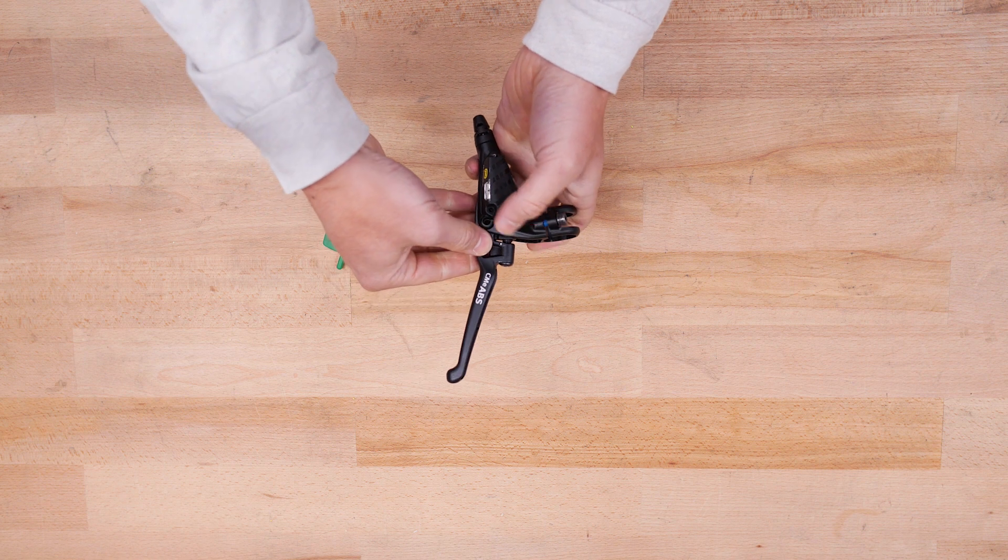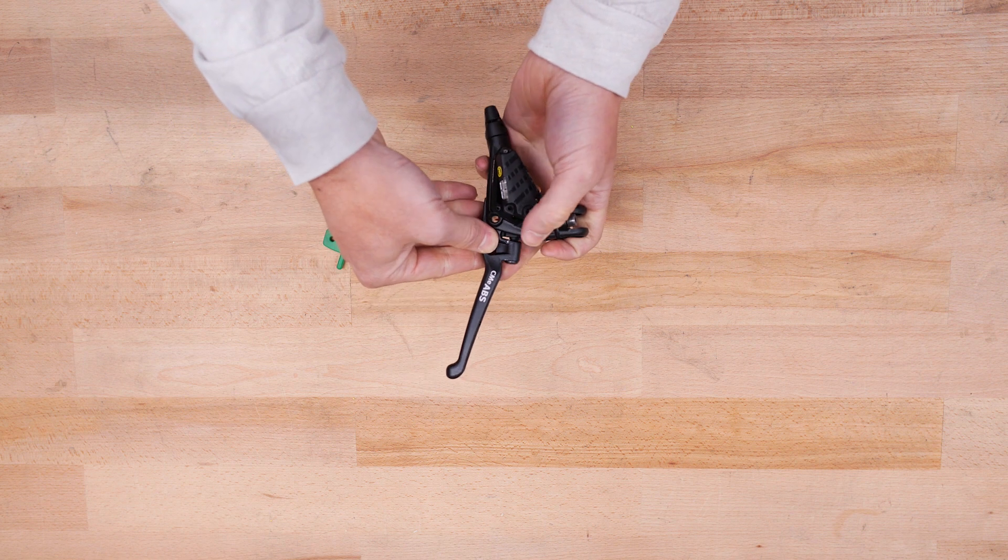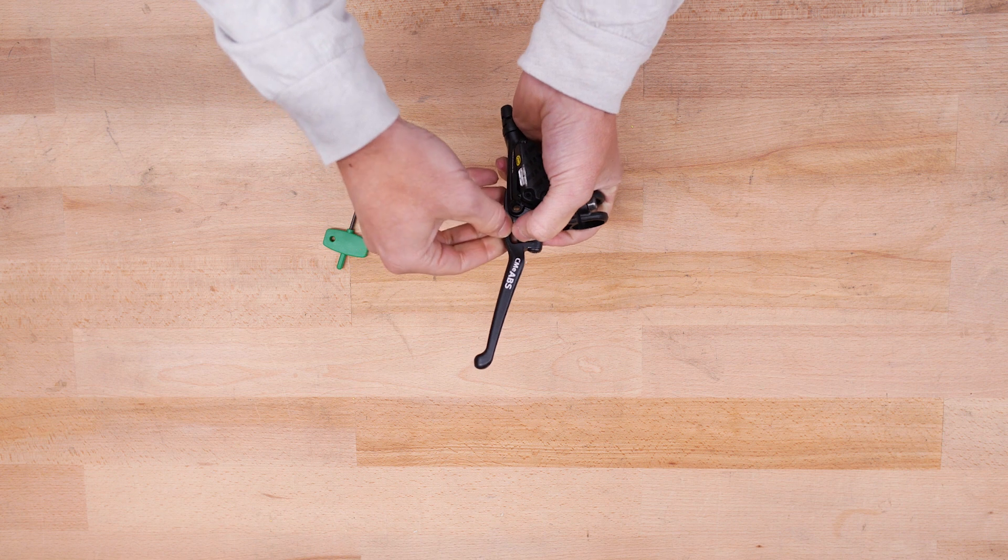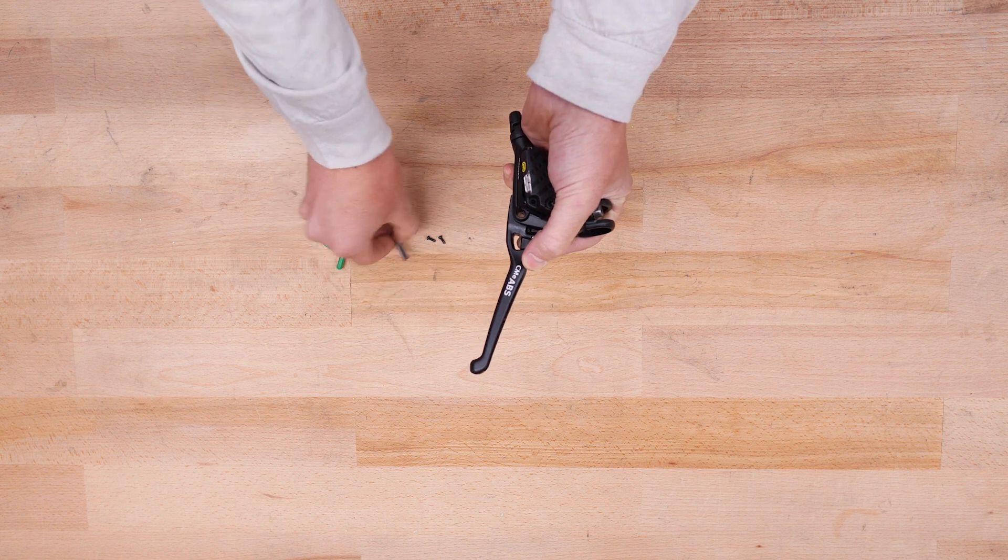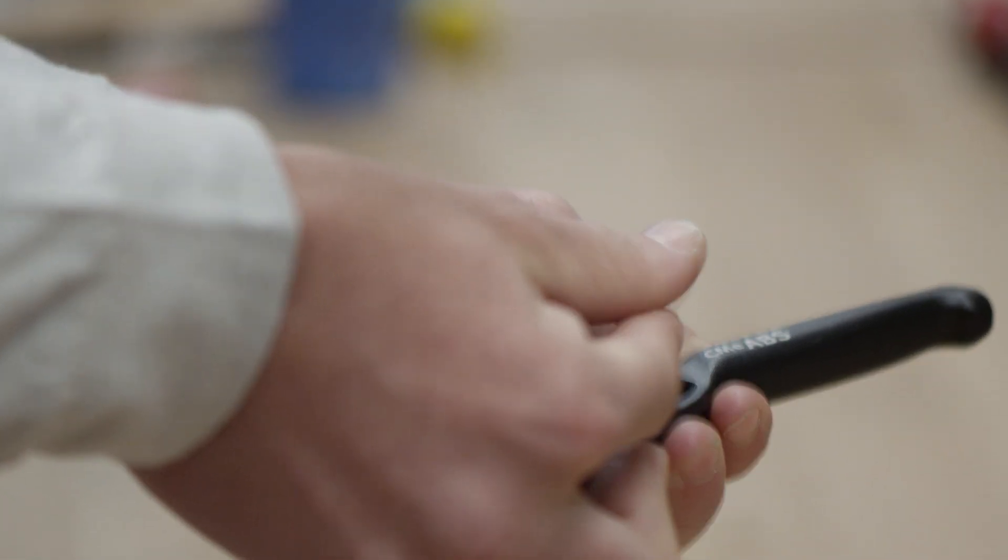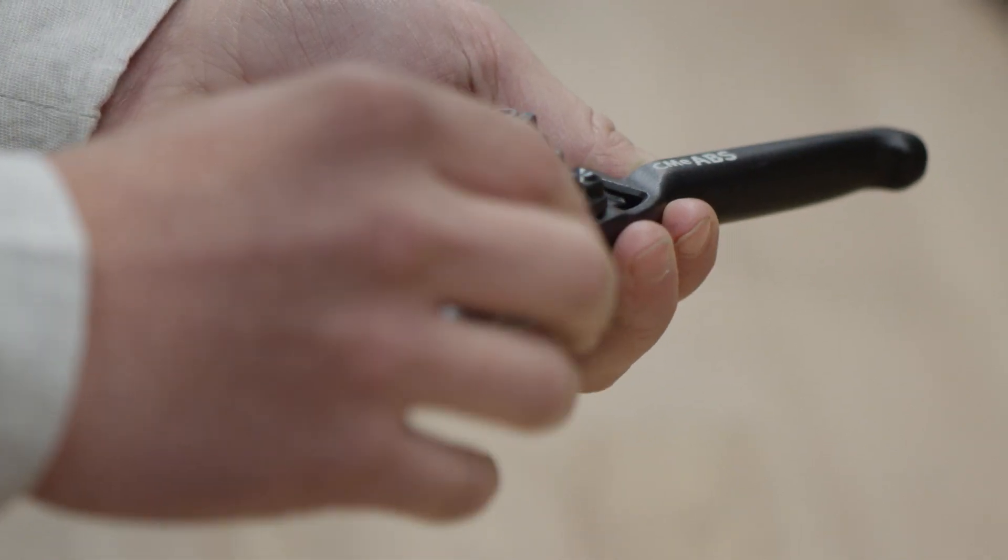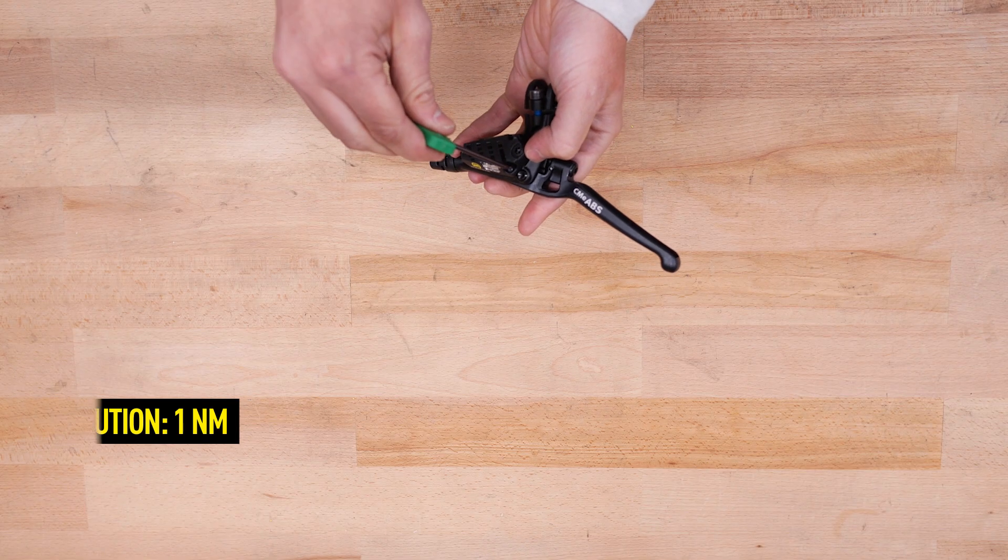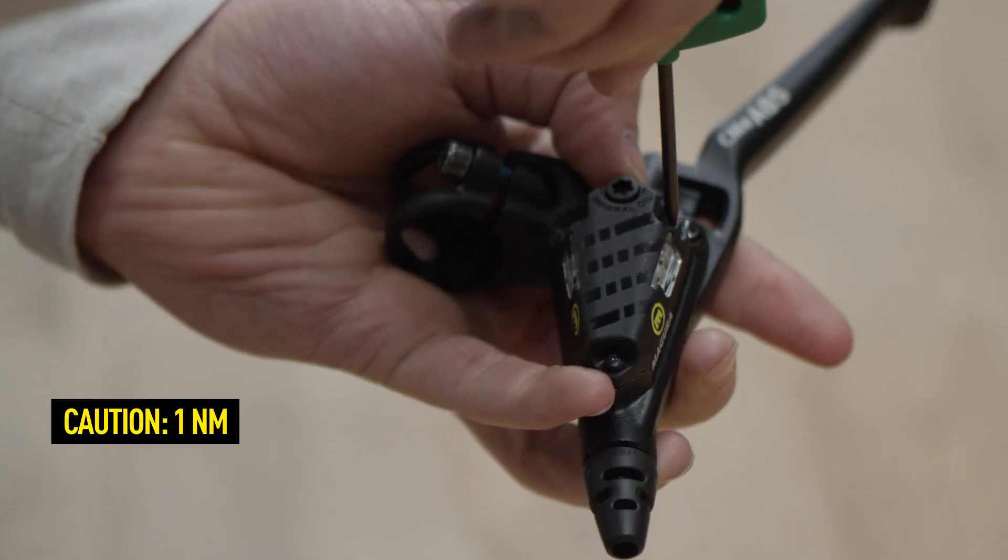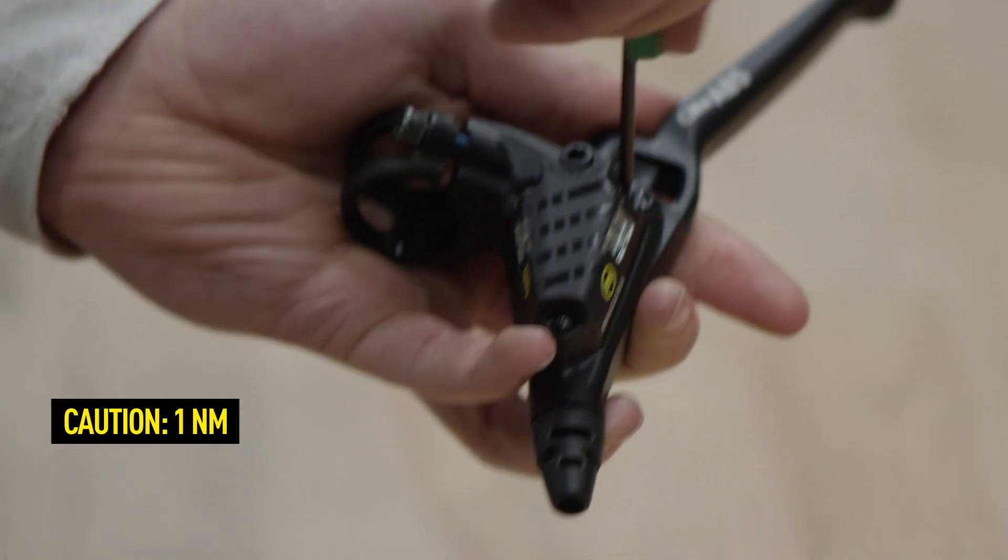To mount the lever blade, place it against the master so that the openings lie one above the other. Then, push the lever bearing pin in from above and close the cover to approximately 1 Nm range using the Torx T7 screws.